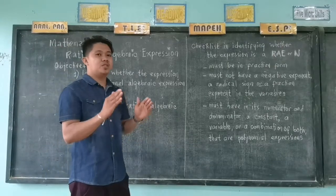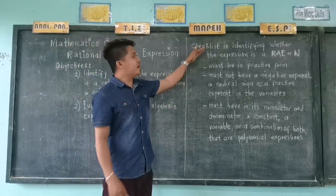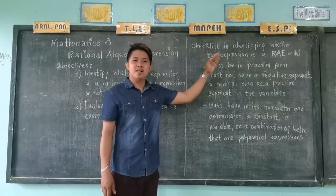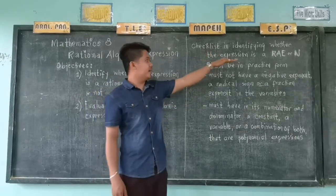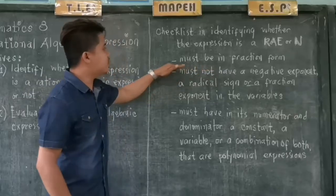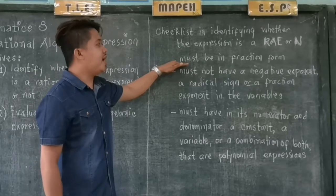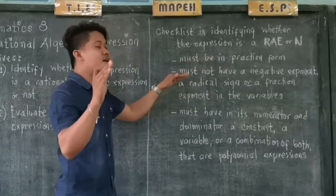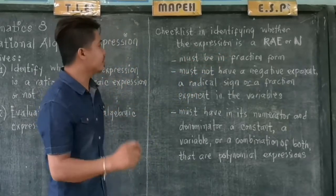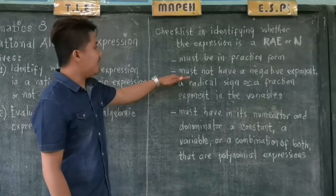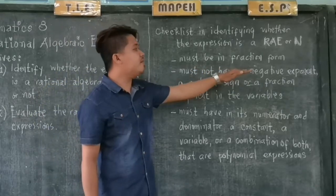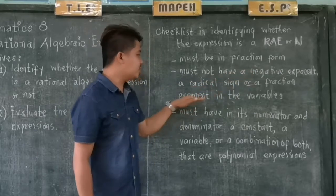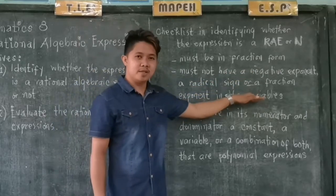I will give you a checklist for identifying whether the expression is a rational algebraic expression or not. First, it must be in a fraction form — a fraction form must have a numerator and denominator. Then, it must not have a negative exponent, a radical sign, or a fraction exponent in the variables.